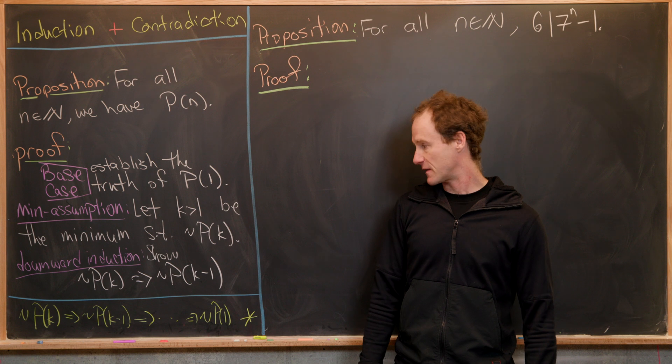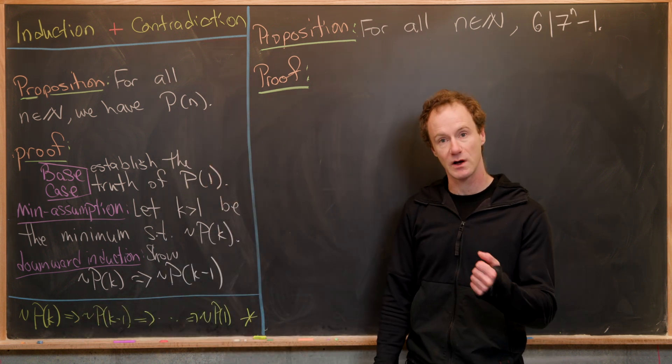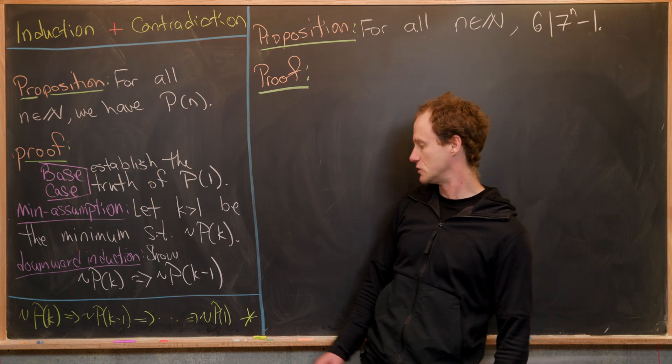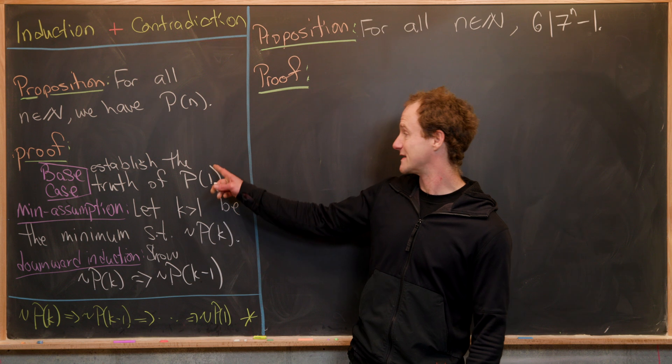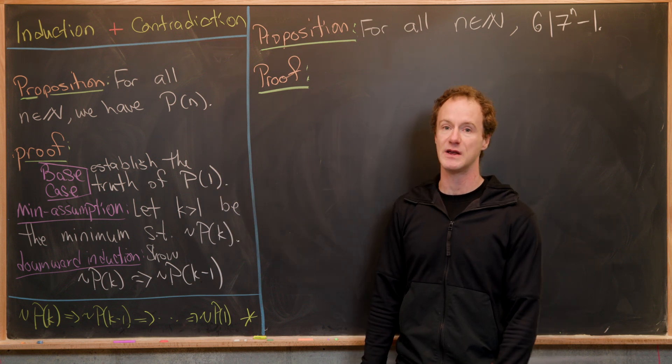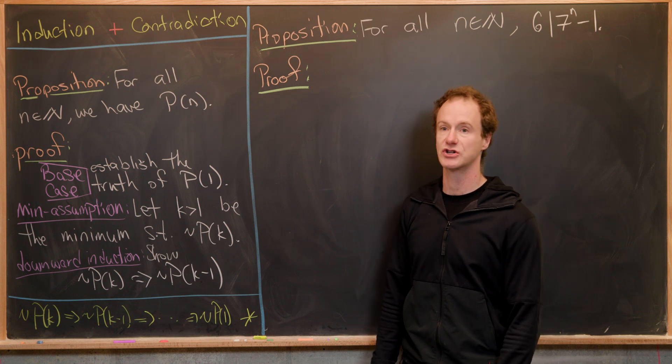Another way of thinking about this: not p of k will imply not p of k minus one, which implies not p of k minus two, all the way down to not p of one. But we established the truth of p of one, so we have p of one and not p of one—again, a contradiction.